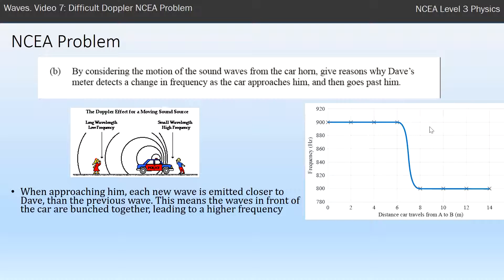Let's talk about the waves in front of the car. The car is moving towards Dave, and each new wave is emitted closer to Dave than the previous wave. As it's moving, it emits more waves and they're closer and closer together. That means the waves in front of the car are bunched — smaller wavelength — and smaller wavelength means higher frequency.